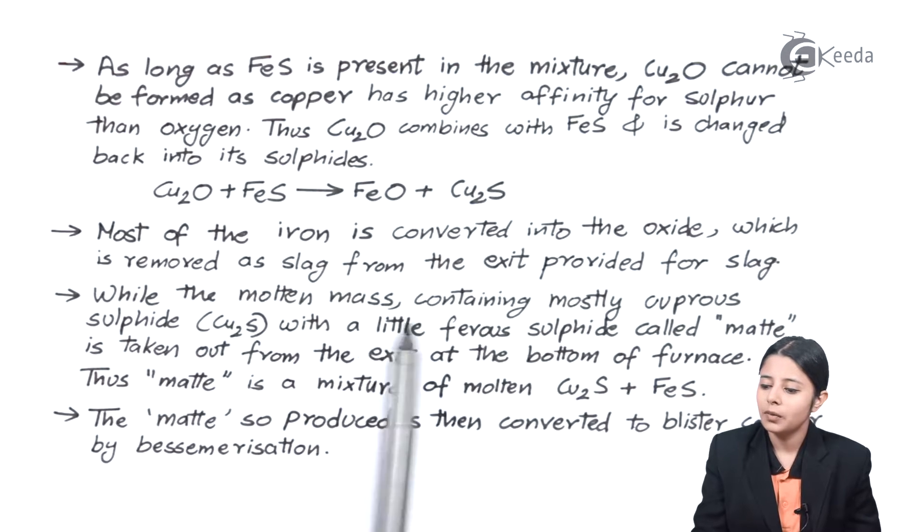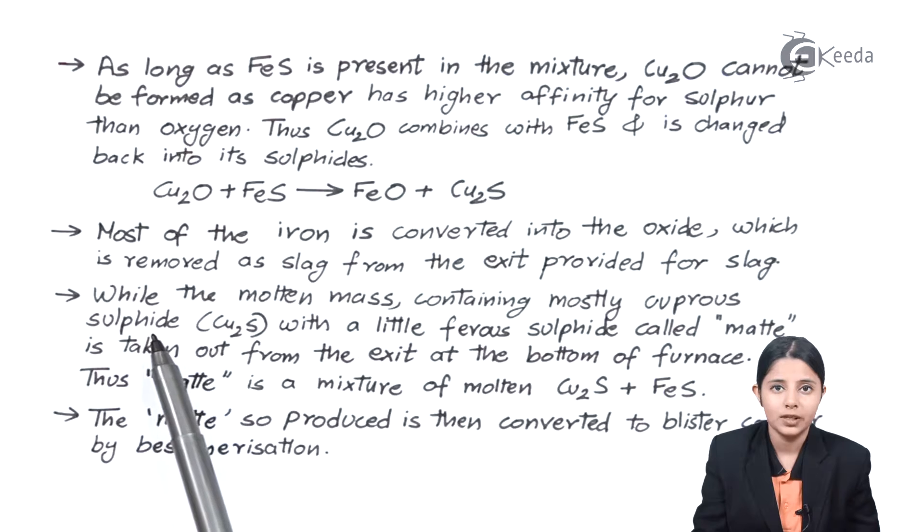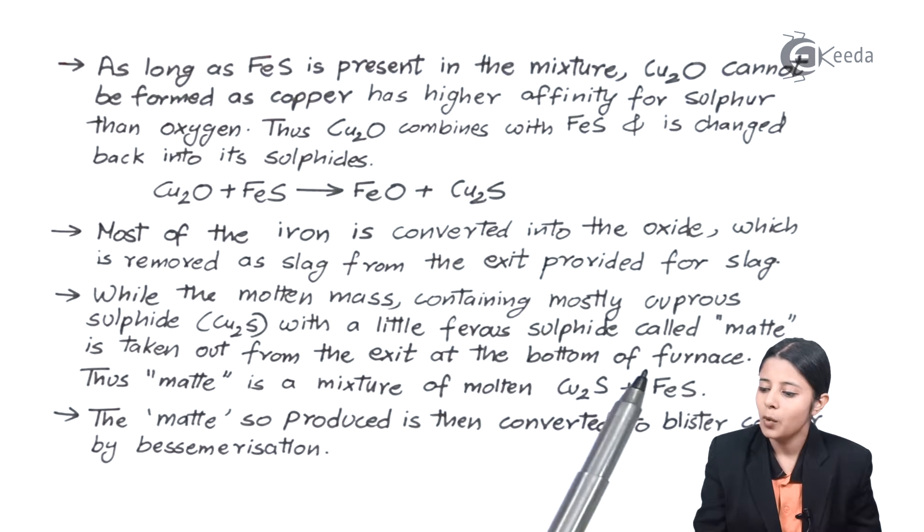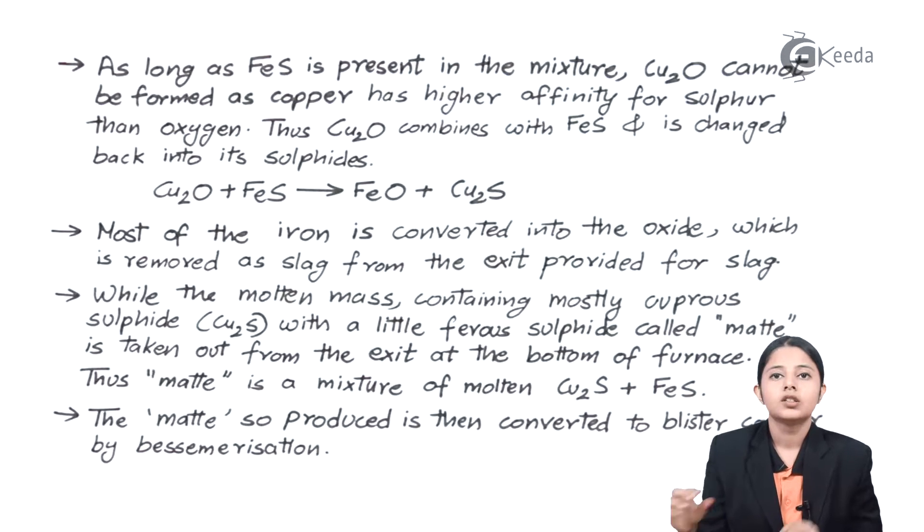While the molten mass containing mostly cuprous sulphide, what is cuprous sulphide? Cu2S with a little ferrous sulphide called matte is taken out from the exit at the bottom of the furnace. So now what happens is what comes in the form of matte. Molten matte is not exactly actually copper. It is Cu2S, copper sulphide plus a little amount of ferrous sulphide. So we cannot use that. We need to refine it further.